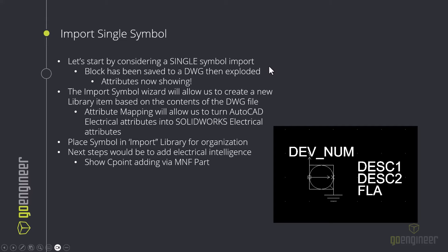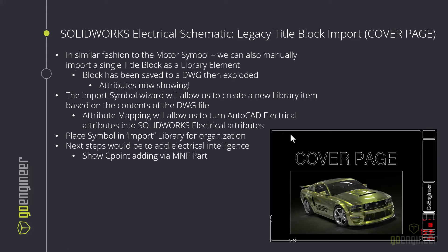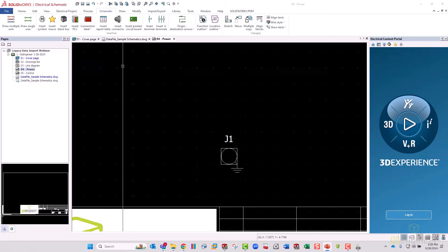Now we step up from individual entities to importing a single title block. The same principle applies for the individual manual method: explode out the title block, save it as an individual DWG file, then bring it into the schematic software. I'll jump into the Title Block Manager, which also has an Import DWG File function. Same exact process — I add my file, click Next.